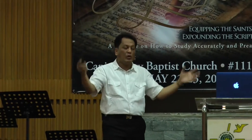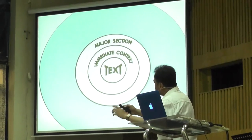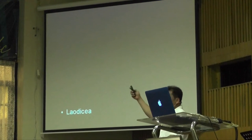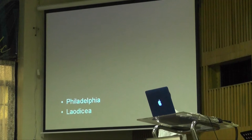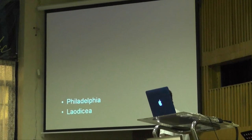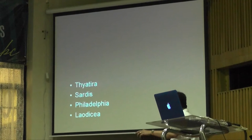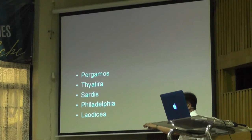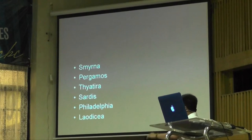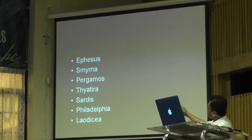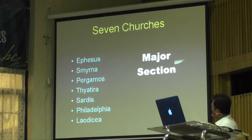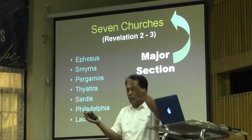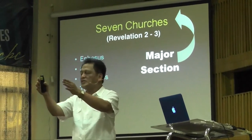The major section can be the whole chapter or two chapters. Starting with verse 14, you have Laodicea, and before that Philadelphia, Sardis, Thyatira, Pergamos, Smyrna, and Ephesus. Starting with chapter 2, you have the seven churches — that's the major section. Revelation 2 and 3 are the same context: the whole two chapters is about Christ evaluating the churches, with commendations and recommendations.